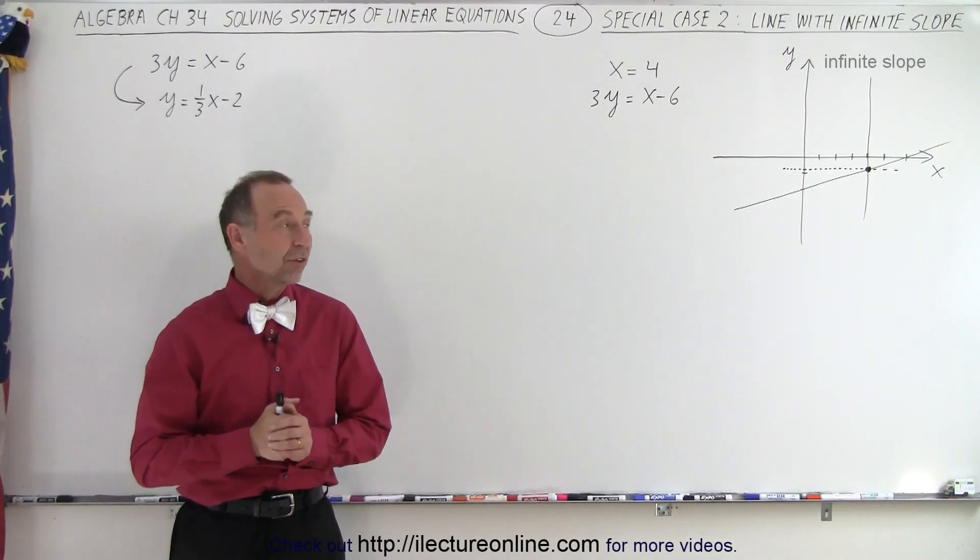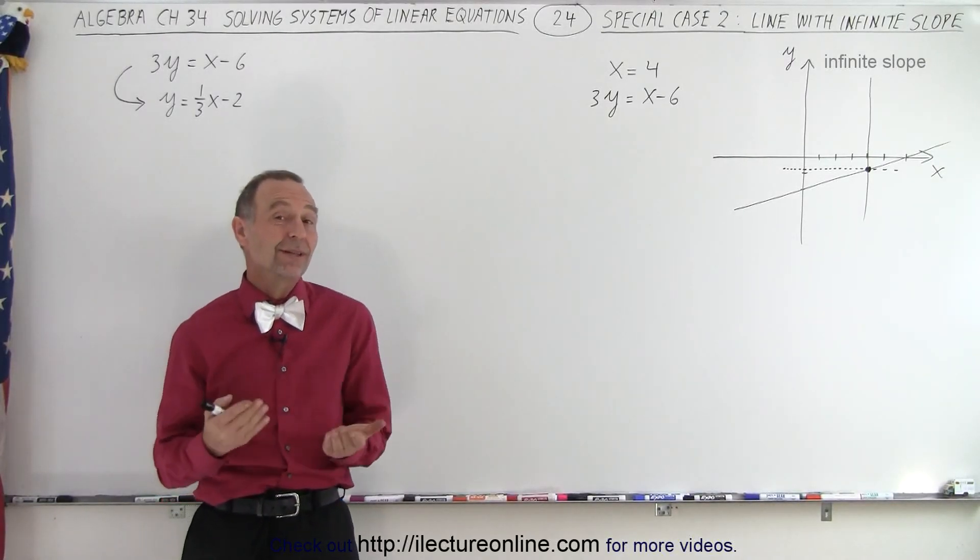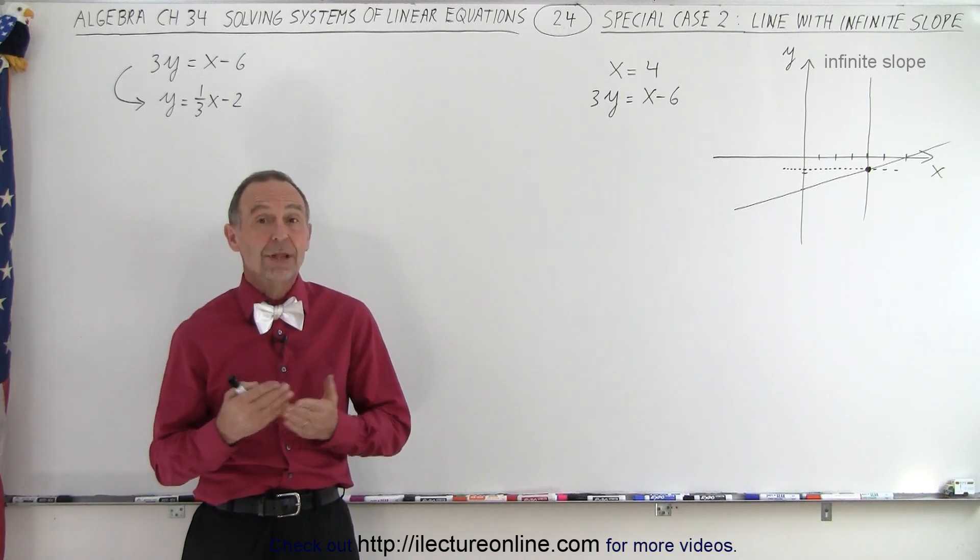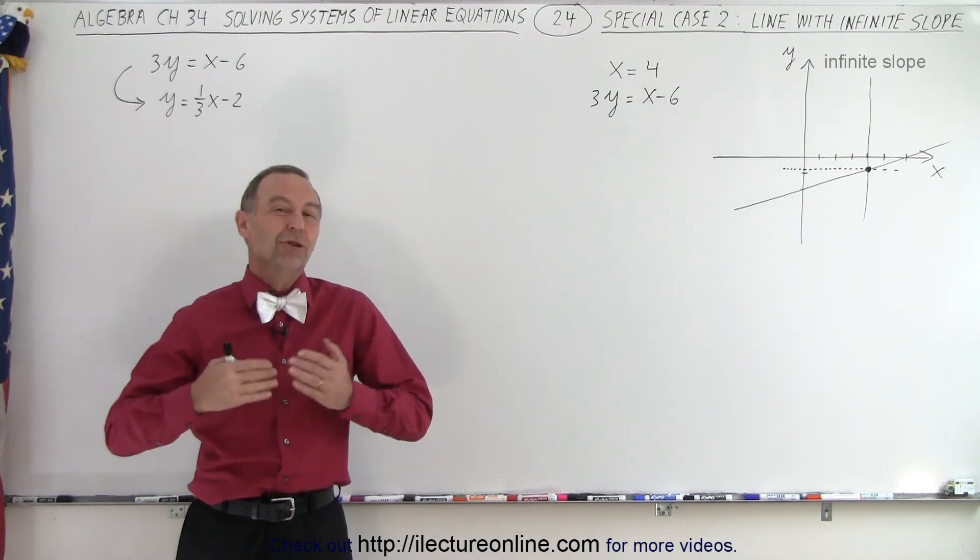Welcome to Electron Line. The second special case is when one of the lines actually has not a real slope, it has an infinite slope.